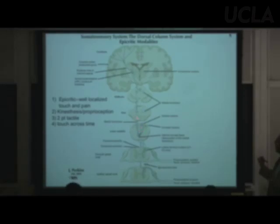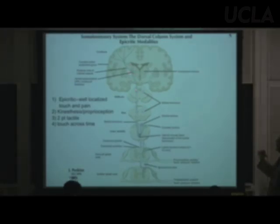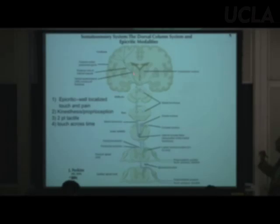The medial lemniscus goes all the way up through exploded sections of the brainstem — all the way up to the thalamus, where it finally synapses in the ventral posterolateral nucleus, the VPL.